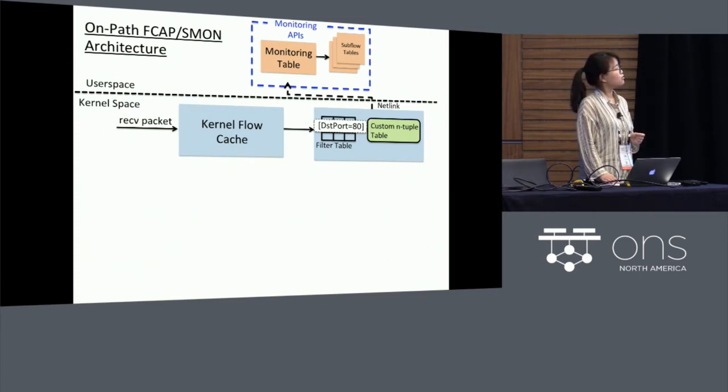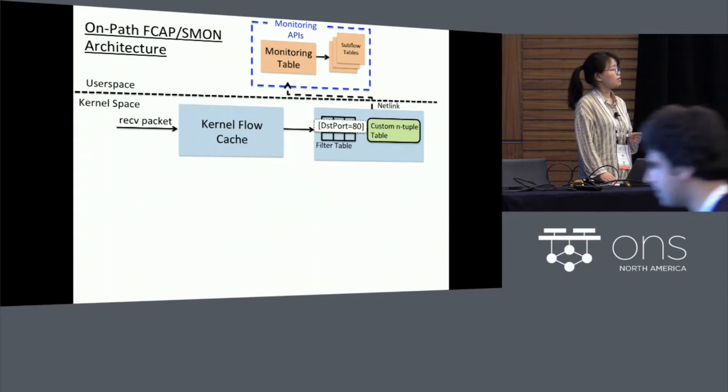And in our designs, we create a custom thread in the user space that is in charge of retrieving the packet, retrieving the flow stats from the end table table, and aggregates those flow stats in the monitoring table as well as the subflow tables, which can be further queried by the upper-layer monitoring applications.